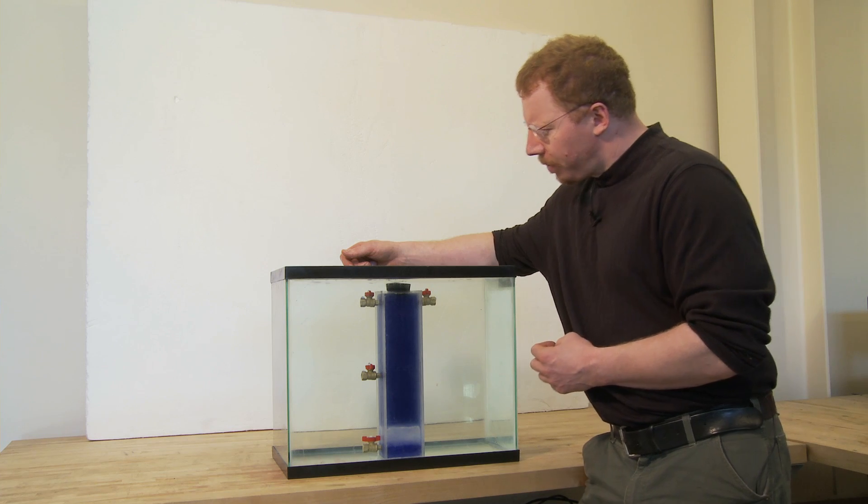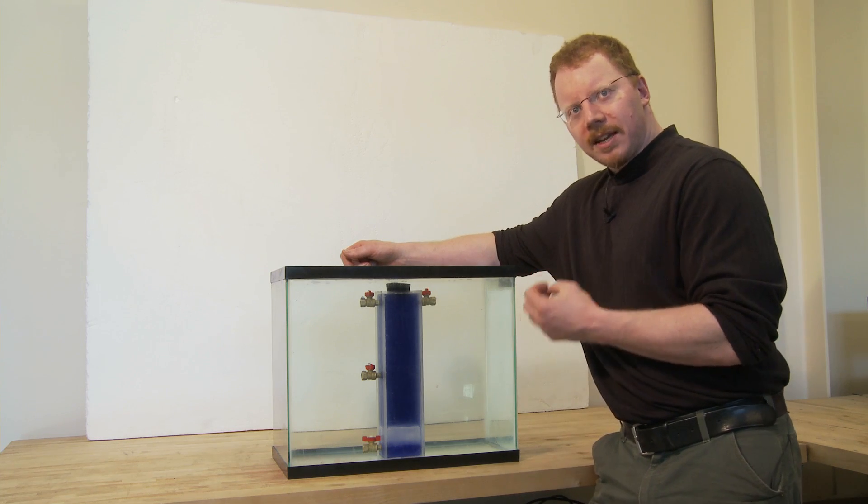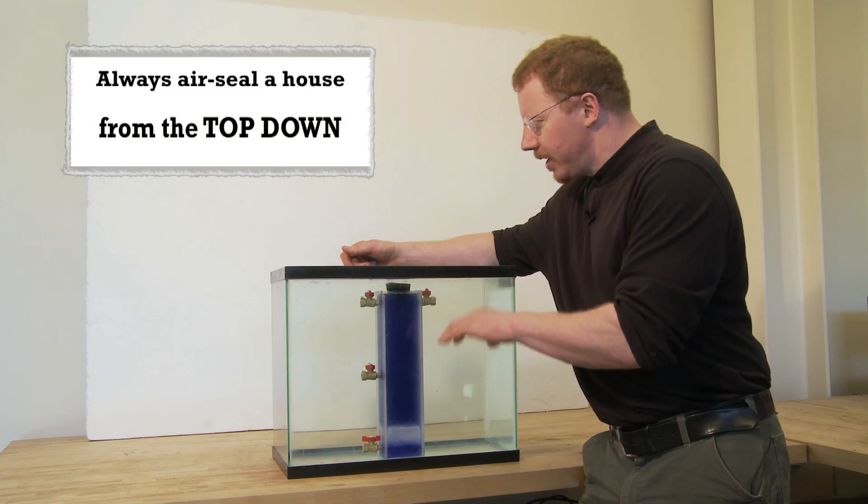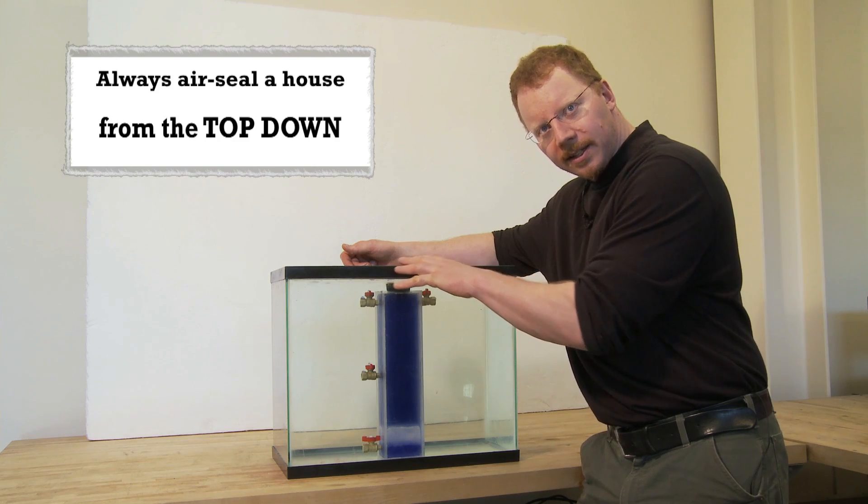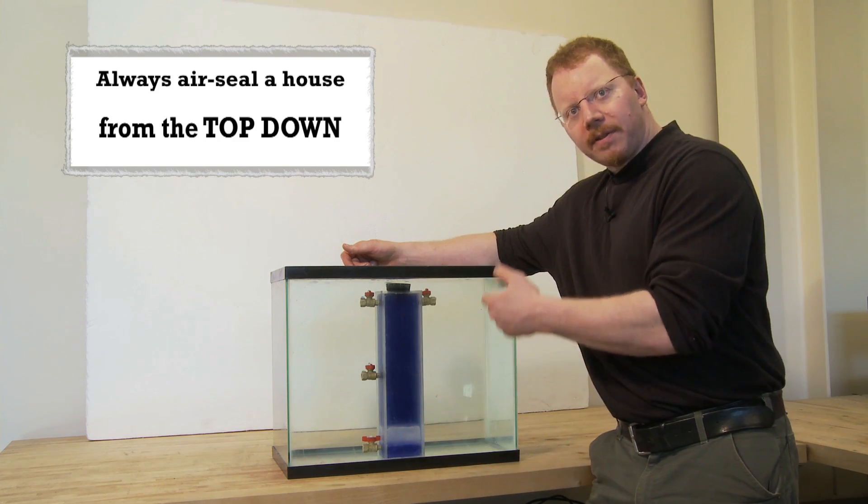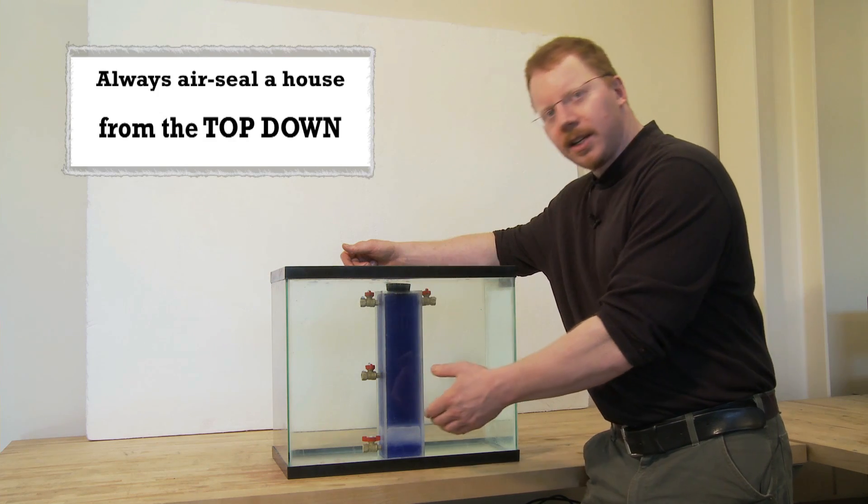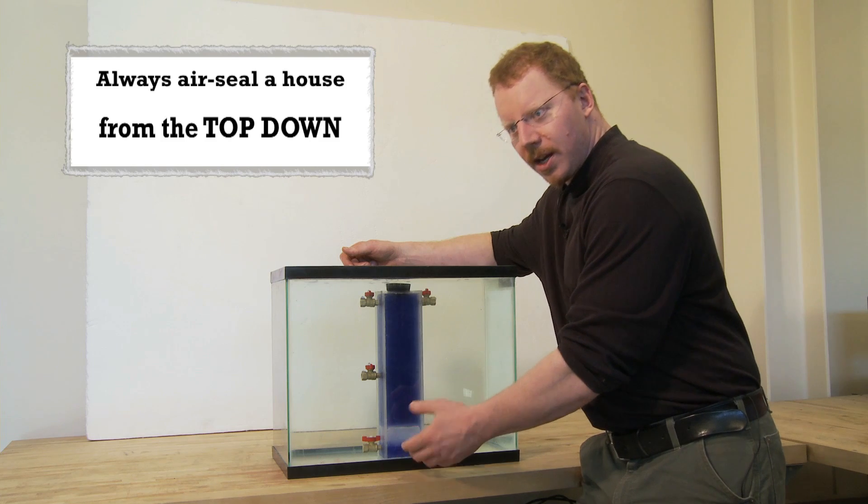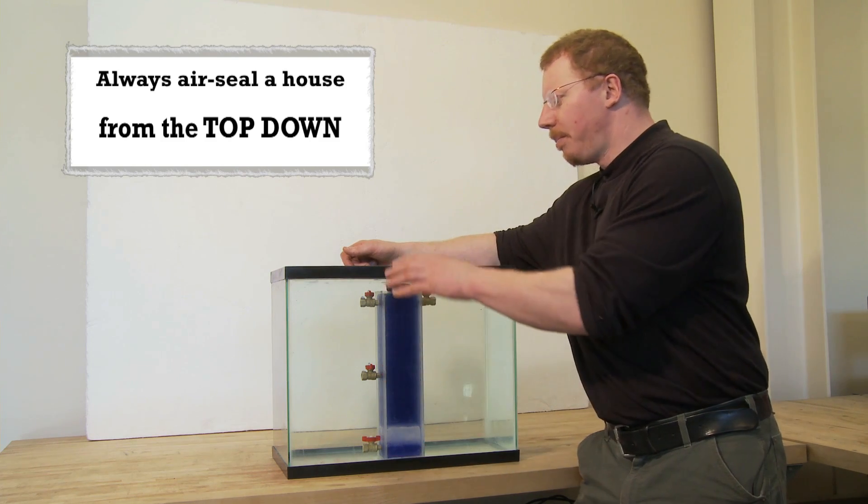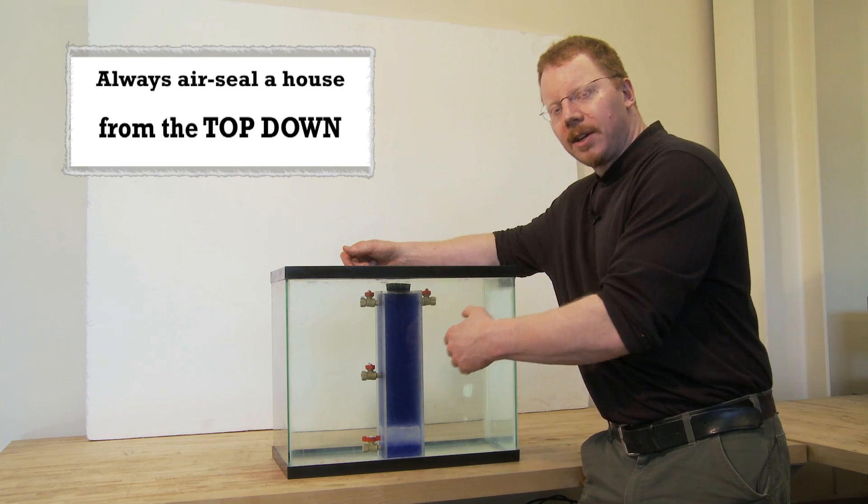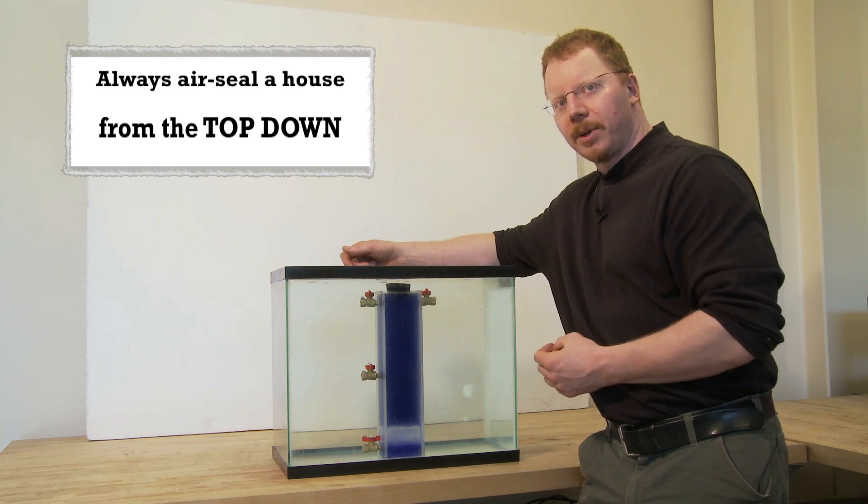This is a very important point. In order to most safely air seal a house, it's always better to air seal from the top down. If you close the holes off at the top, you will reduce that incentive to cause backdrafting of appliances and to have air leakage come in from the bottom. If you air seal from the bottom first, you're making a tighter house, but you're still leaking out of the top and your chances of backdrafting an appliance or causing other problems are much greater.